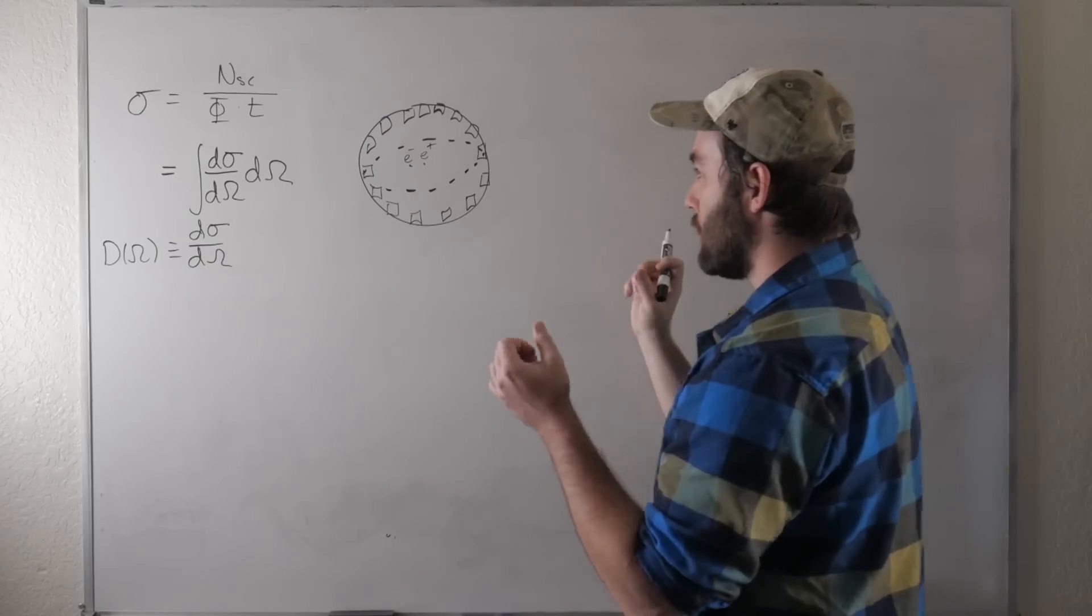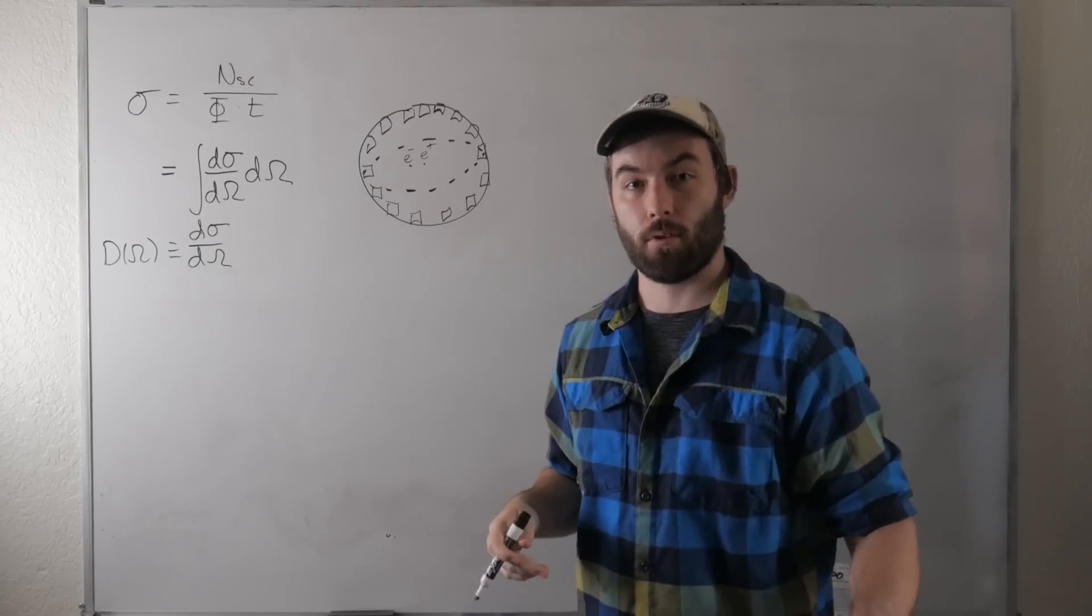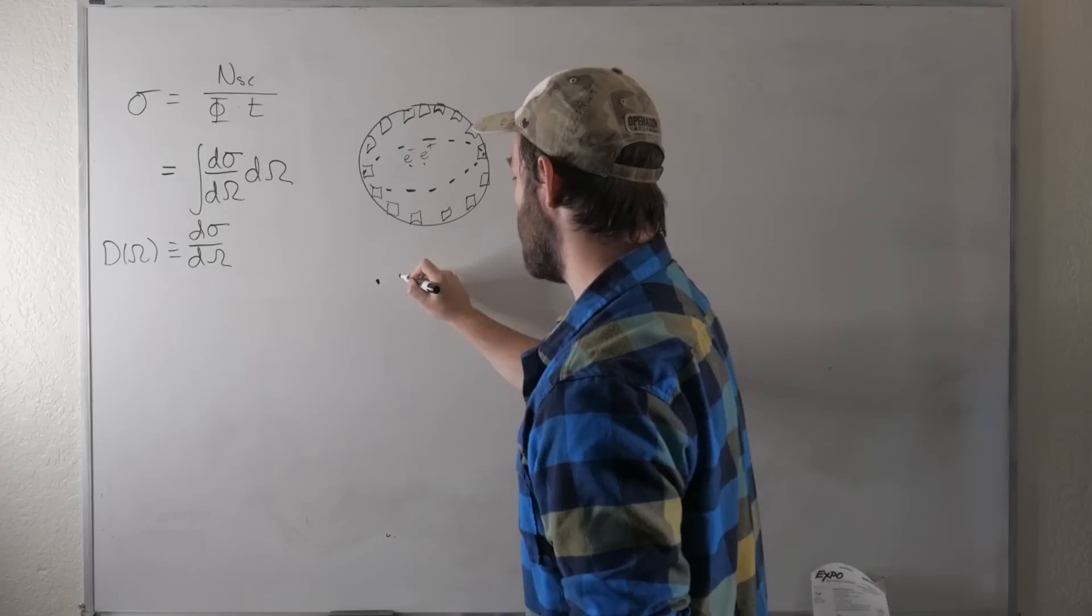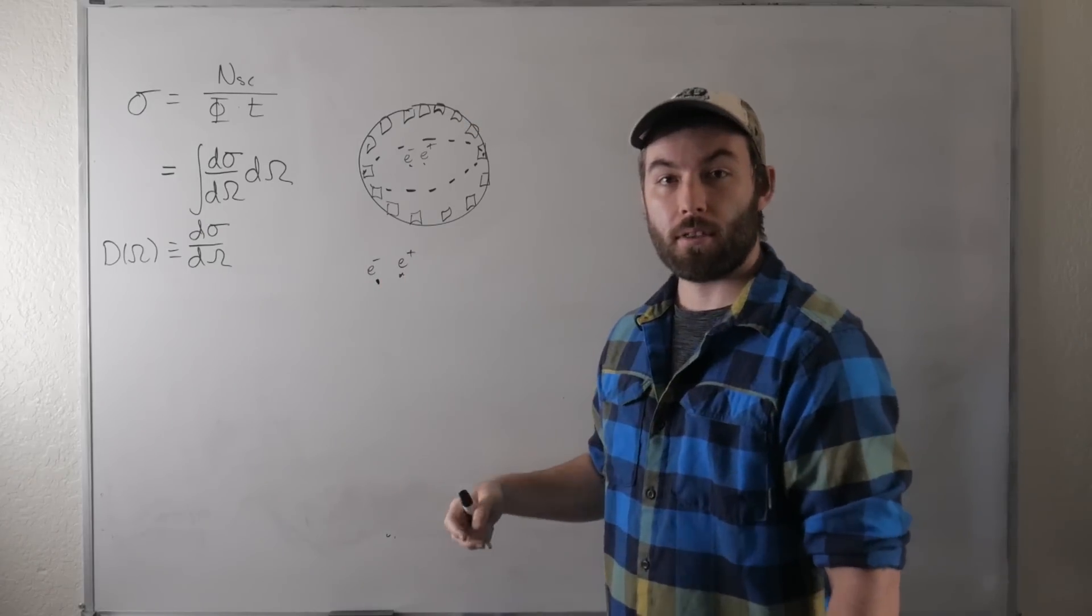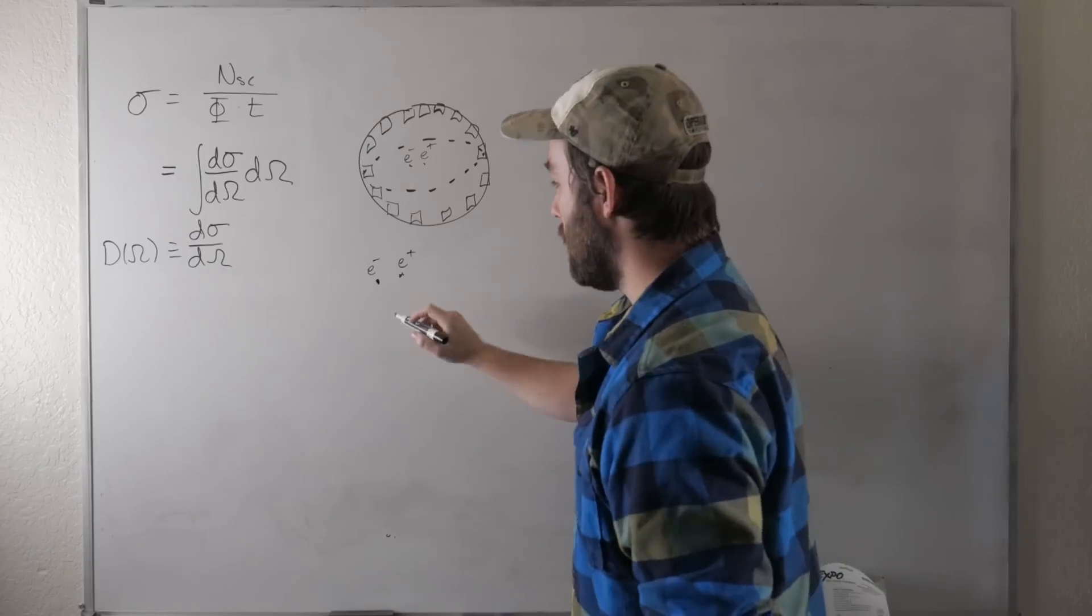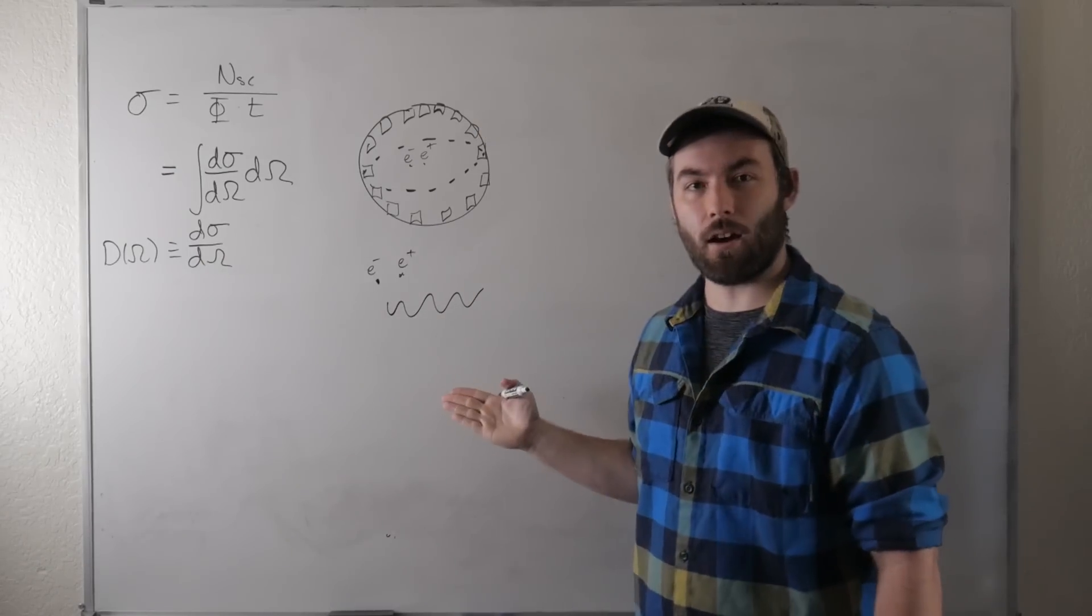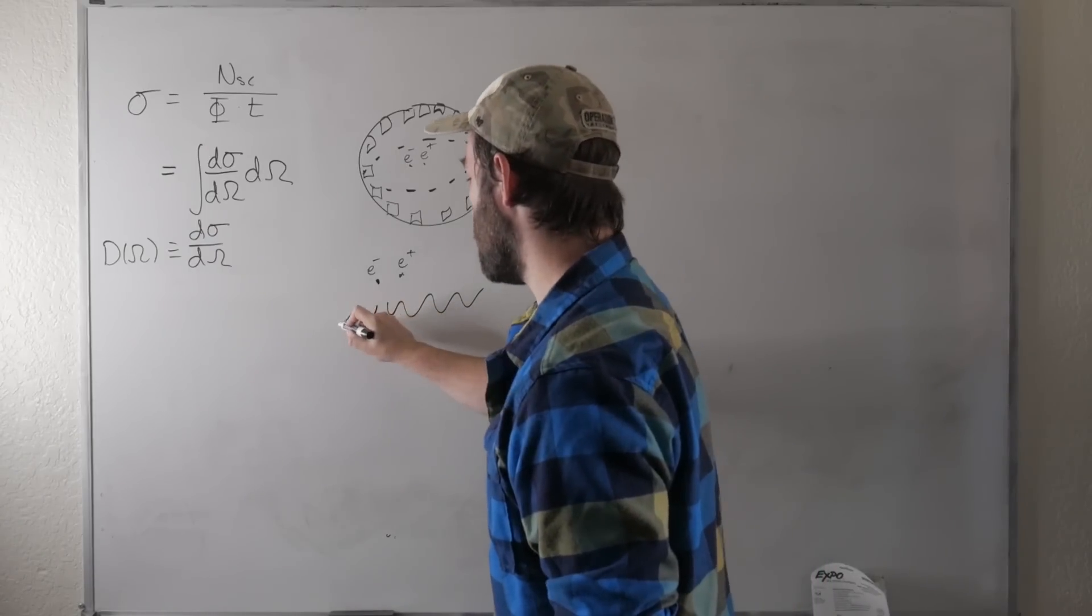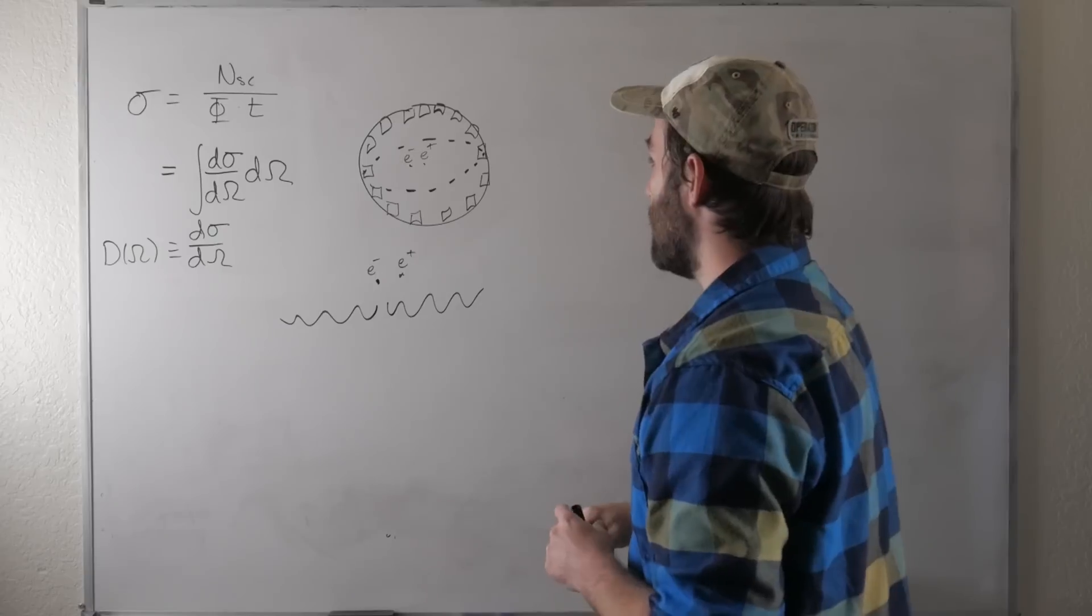Now, when these electrons and positrons annihilate, they should produce two photons if we're in vacuum. Why two photons? Well, because if the net momentum in the initial state, e minus, e plus, is zero, then it should be that in the final state. If we only produced one photon, well, then there's no such thing as a photon with zero momentum. So we should produce another photon with equal and opposite momentum in order for momentum to be conserved.